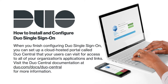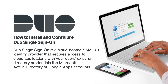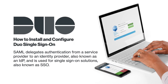This video will only cover setting up Duo Single Sign-On. Duo Single Sign-On is a cloud-hosted SAML 2.0 identity provider that secures access to cloud applications with your users' existing directory credentials like Microsoft Active Directory or Google Apps accounts. SAML delegates authentication from a service provider to an identity provider, also known as an IDP, and is used for single sign-on solutions, also known as SSO.